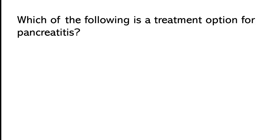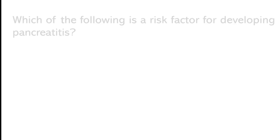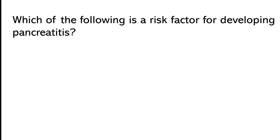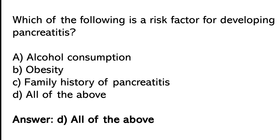Which of the following is a treatment option for pancreatitis? The correct answer is option D — all of the above. Which of the following is a risk factor for developing pancreatitis? Alcohol consumption, obesity, family history of pancreatitis, or all of the above. The correct answer is option D — all of the above.